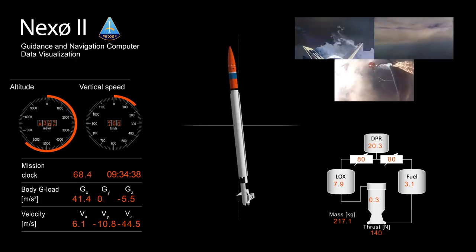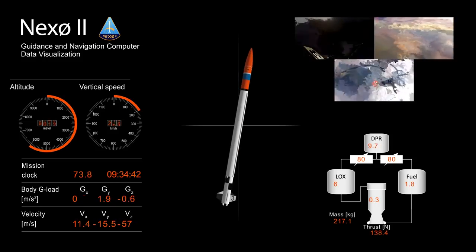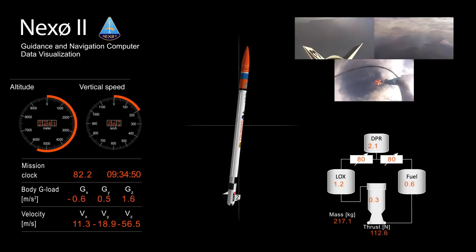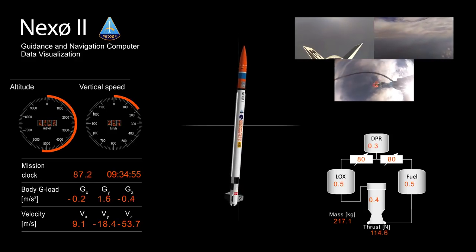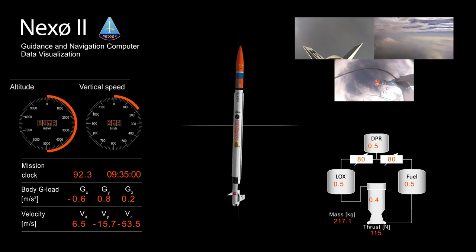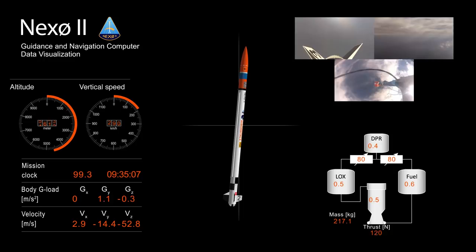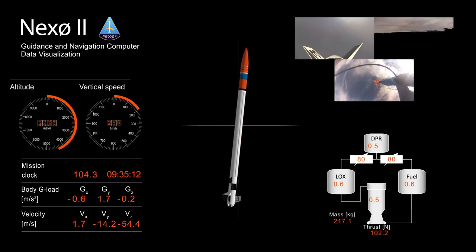Then the balloon comes back. From this point the rocket just descends to 3000 meters and then it will deploy the parachute.